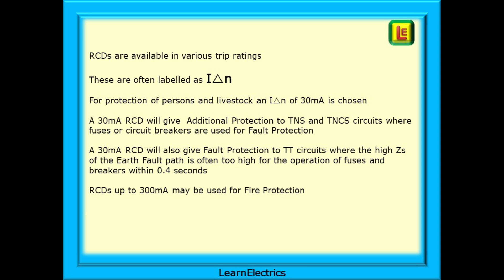RCDs are available in various trip ratings, often labelled as I-delta-N — the current difference in the neutral. For protection of persons and livestock, an I-delta-N of 30mA is chosen, and most of this video is about 30mA devices. A 30mA RCD gives additional protection to TNS and TNCS circuits, fault protection to TT circuits where high ZS of the earth fault path is often too high for fuses and breakers within 0.4 seconds, and RCDs up to 300mA may be used for fire protection.